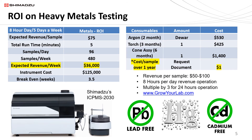Food labels often contain nutrient information such as sodium, potassium, calcium, and magnesium, which can be analyzed by an inductively coupled plasma mass spectrometer, or ICP-MS. The ICP-MS is also used to analyze toxic heavy metals, including the big four of arsenic, cadmium, lead, and mercury — analysis required by most states. In addition, various states require analysis of other elements.